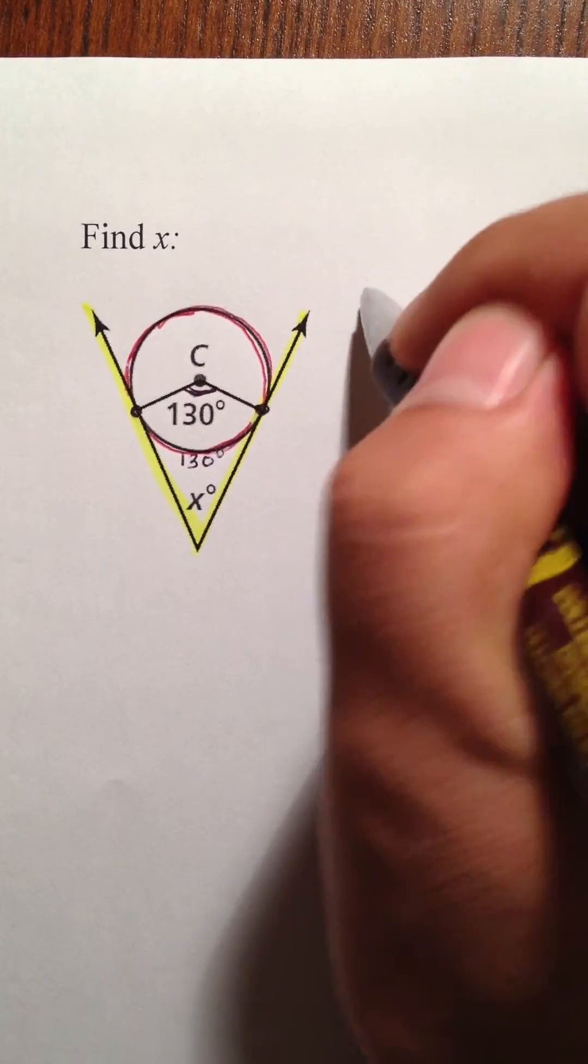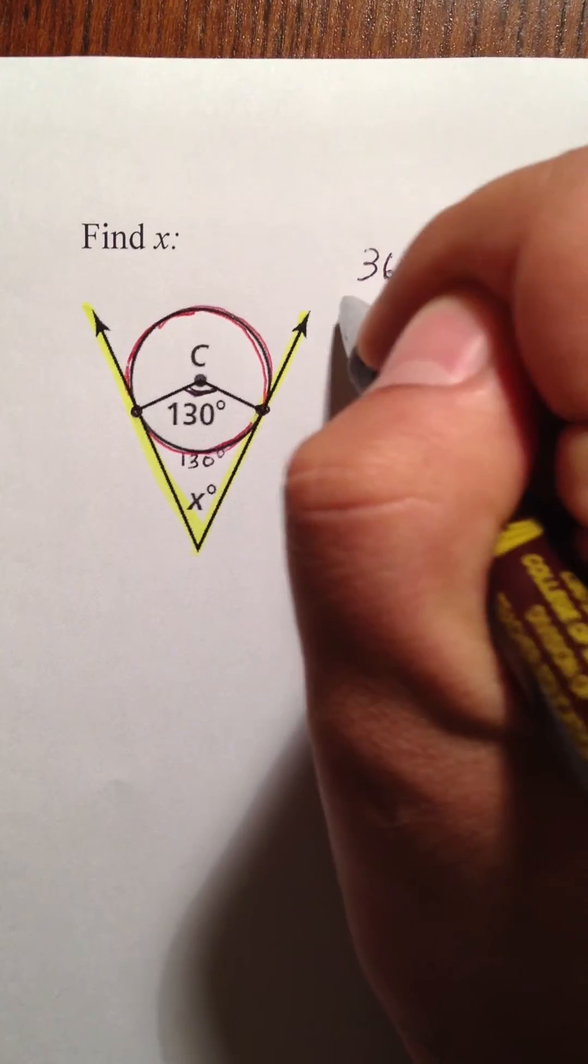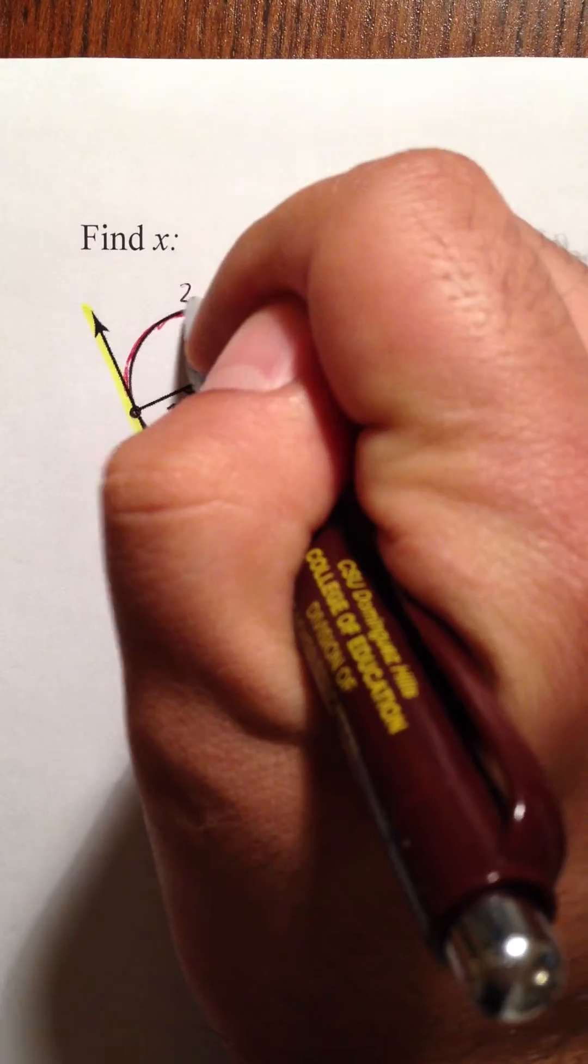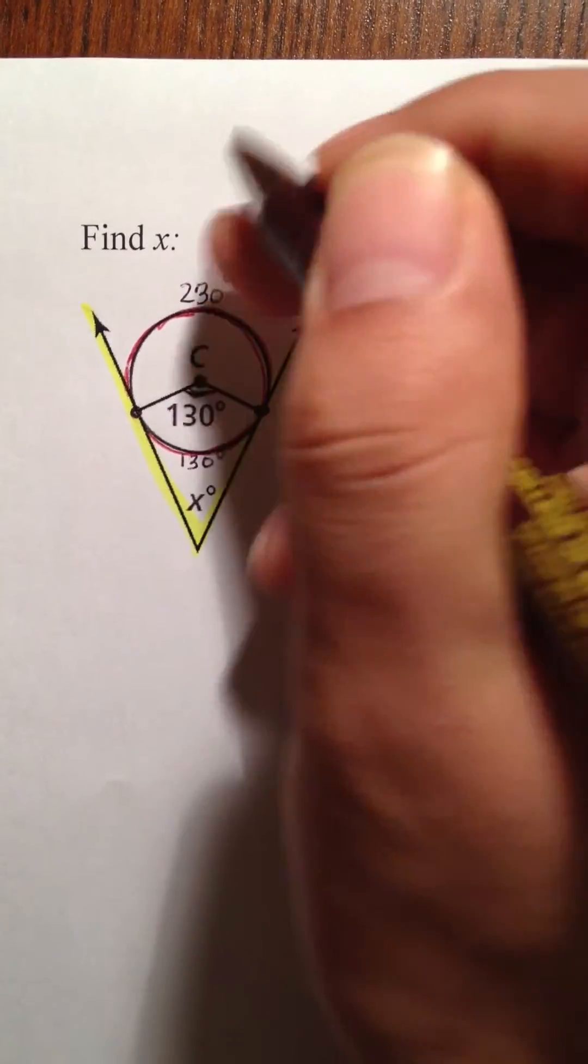Now, as I said before, since circles are 360 degrees total, we minus 130. So, 230 degrees is this arc on the far outside.